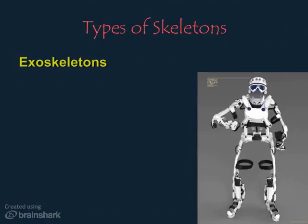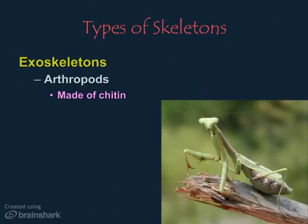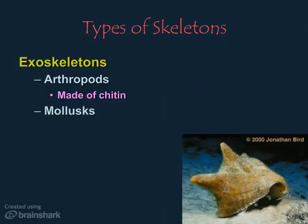The term exoskeleton means outside or external skeleton. Arthropods have exoskeletons made of chitin. Chitin has come up quite a few times in our vocabulary, first introduced when we discussed carbon compounds. It's a very tough, complex carbohydrate often combined with other compounds like lipids to affect different properties, like being waterproof.